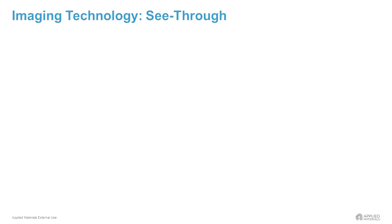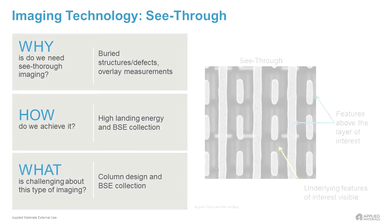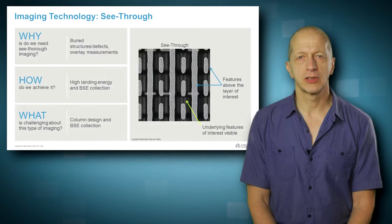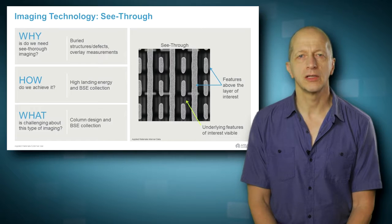Imaging buried structures requires increasing landing energy of the beam so that it can penetrate deeper into the substrate. High landing energies over 10 kV as well as efficient collection of backscattered electrons enable the imaging of subsurface or underlayer features and see through the higher layers.